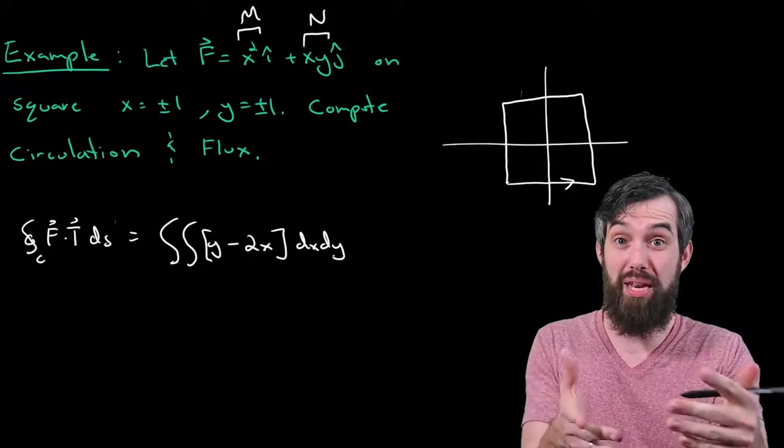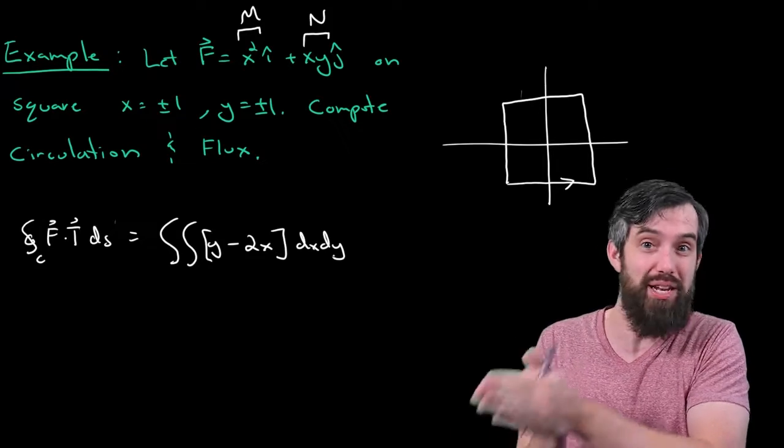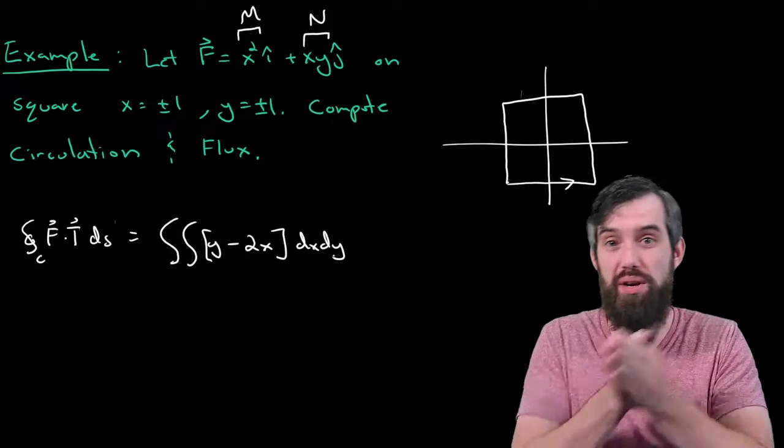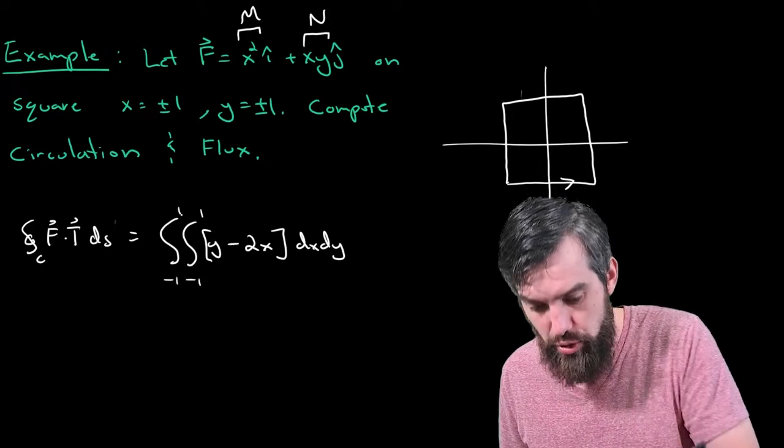And then, finally, what are my limits of integration? Well, because it's the square where the values are like x going from minus 1 to plus 1, and y minus 1 to plus 1, the result is just minus 1 up to 1, minus 1 up to 1.